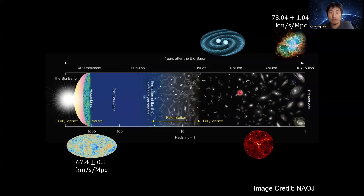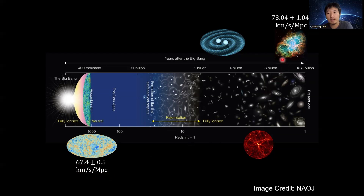Let's have a brief review on the measurement of the Hubble parameter. Currently we have several methods. One is from the early universe measurement from the cosmic microwave background. The Planck result reported a Hubble parameter value of 67.4 km per second per Mpc. Meanwhile, in the later universe, we use Type Ia supernovae as a standard candle, giving 73.04 km per second per Mpc. These two values do not match — the difference has reached a 5-sigma inconsistency. This is the well-known Hubble tension.